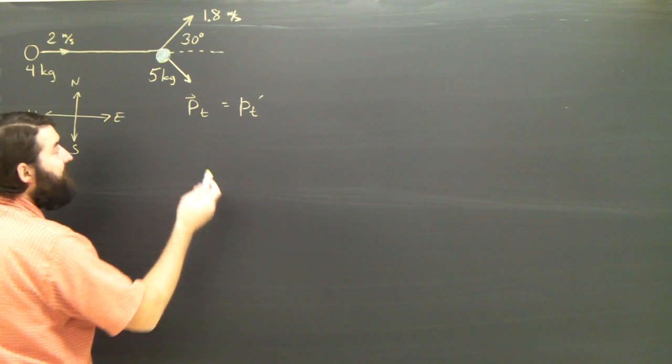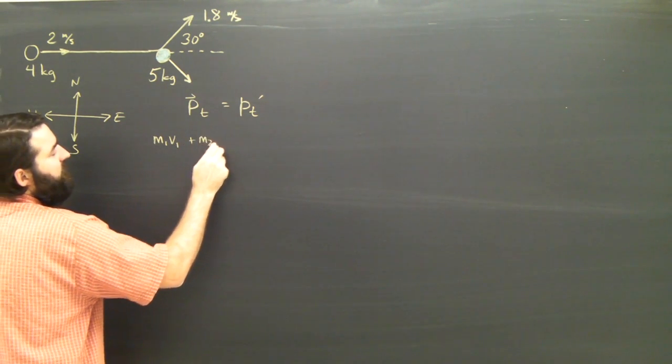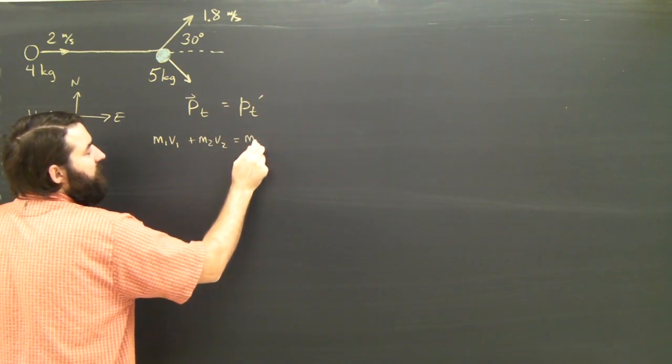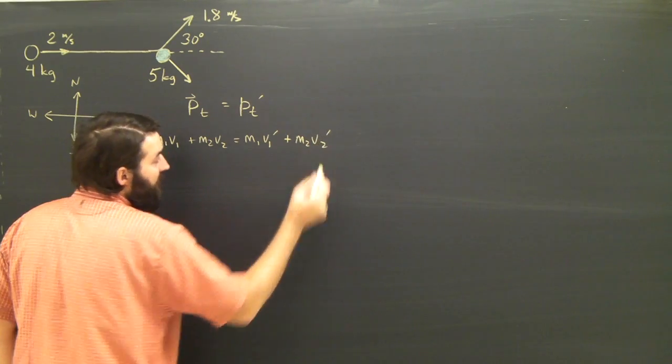We'll call the 4 kilogram object M1. So M1 V1 plus M2 V2 equals M1 V1 prime plus M2 V2 prime.